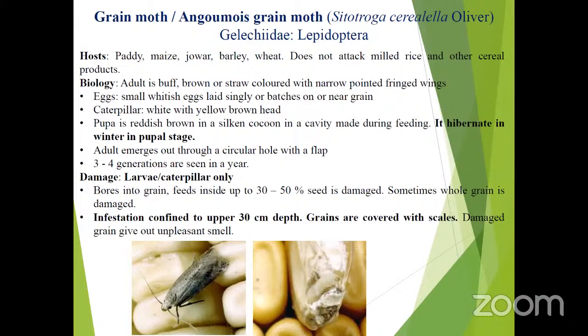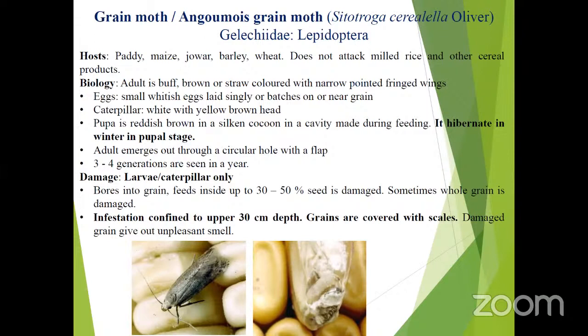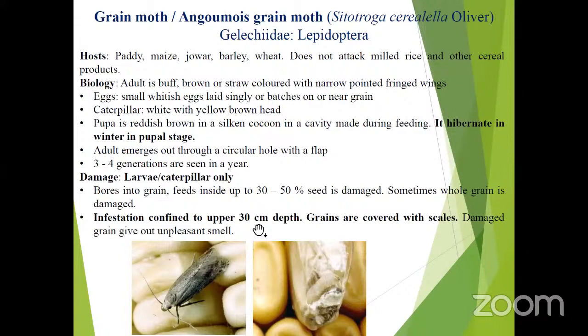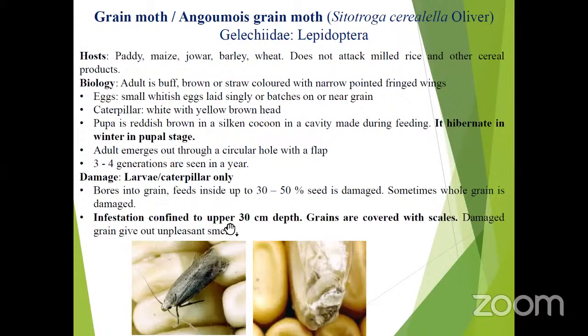Coming to the moth pest — Lepidopteran pest — Angoumois grain moth. They often ask for the scientific name or family. A key biology point is hibernation: this insect hibernates in the pupal stage during winters. Pupae can be seen on storage structure walls, receptacles, or stored grains. The damaging stage is the larva or caterpillar. Infestation by this moth is confined to the upper 30 cm depth of grain. Grains will be covered with a lot of scales, and severe infestation produces an unpleasant smell.